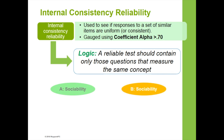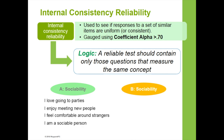Consider two assessments measuring sociability. The first assessment has four items: love going to parties, enjoy meeting new people, comfortable around strangers, and sociable person. These four items are consistently and uniformly measuring the idea of sociability. Without even looking at the responses, you can tell that this assessment will have high reliability, high consistency.